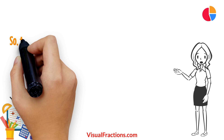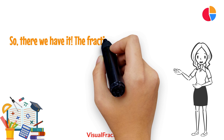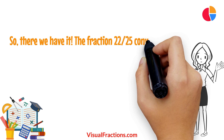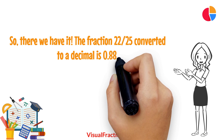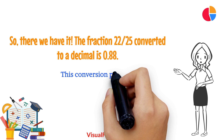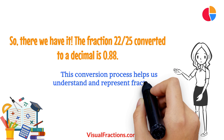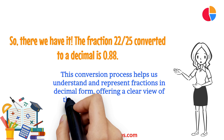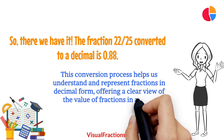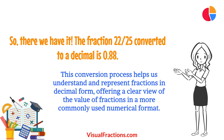So, there we have it. The fraction 22/25ths converted to a decimal is 0.88. This conversion process helps us understand and represent fractions in decimal form, offering a clear view of the value of fractions in a more commonly used numerical format.